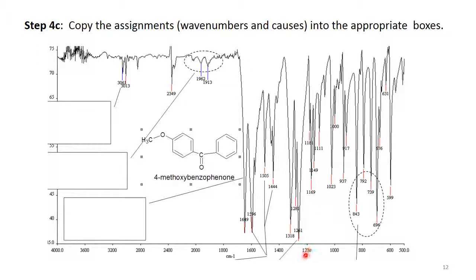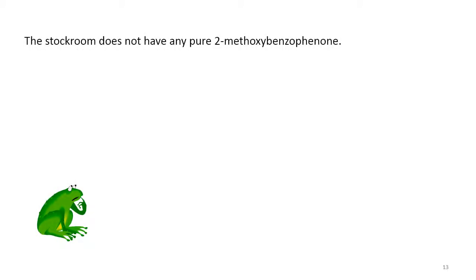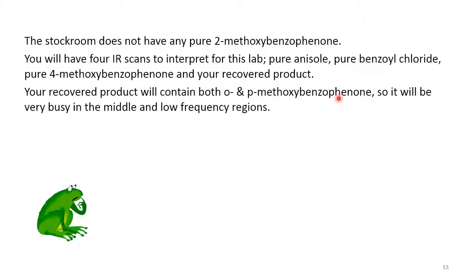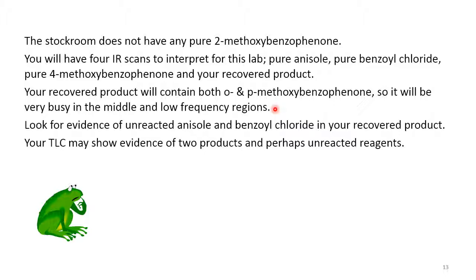Here is the IR scan of 4-methoxybenzophenone, which is para-disubstituted. At 830 wavenumbers is the out-of-plane bend absorption for a para-disubstituted aromatic. At 690 and 770 wavenumbers are the two absorption bands for a monosubstituted aromatic ring. Note that the stockroom does not have pure 2-methoxybenzophenone, so you'll have four IR scans to interpret: pure anisole, pure benzoyl chloride, pure 4-methoxybenzophenone, and your recovered product. Your recovered product should contain both ortho- and para-methoxybenzophenone, so it will be busy in the middle and low-frequency regions. Also look for evidence of unreacted anisole and benzoyl chloride in your recovered product.